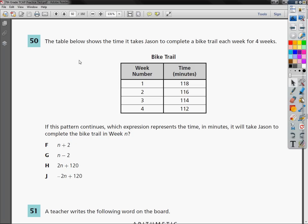The table below shows the time it takes Jason to complete a bike trail each week for 4 weeks. If the pattern continues, which expression represents the time in minutes it will take Jason to complete the bike trail in week n?